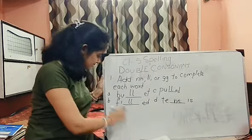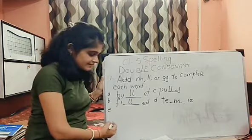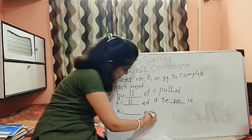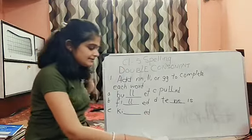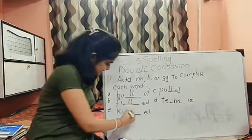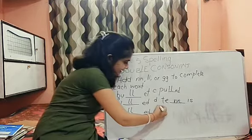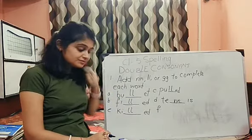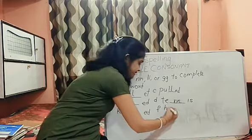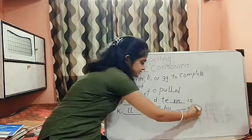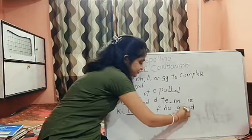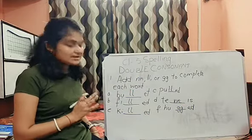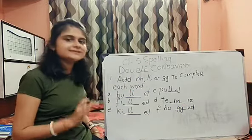So till D is done. Then E: K I dash E D. Killed. K I double L E D. Number F: H U dash E D. Your answer is H U double G E D — we have used double G. Hugged.